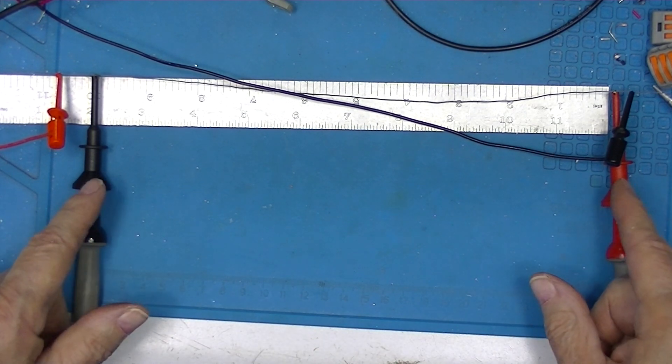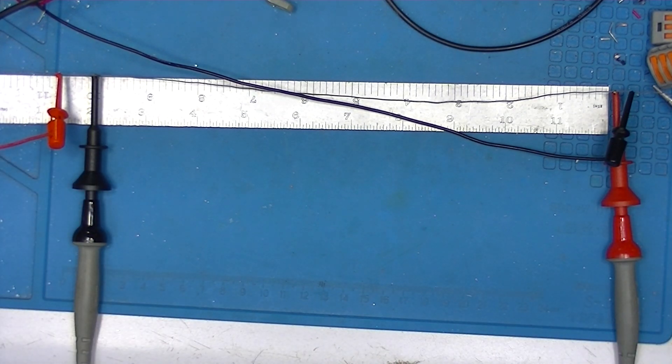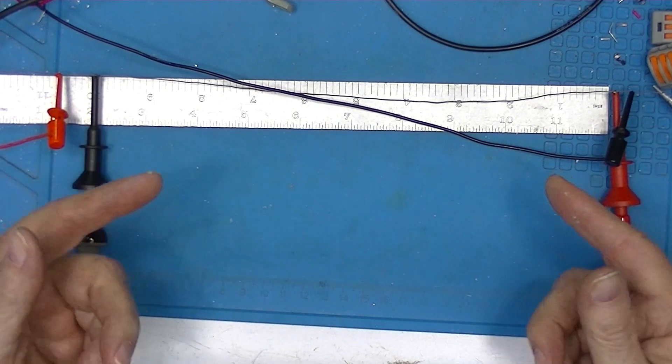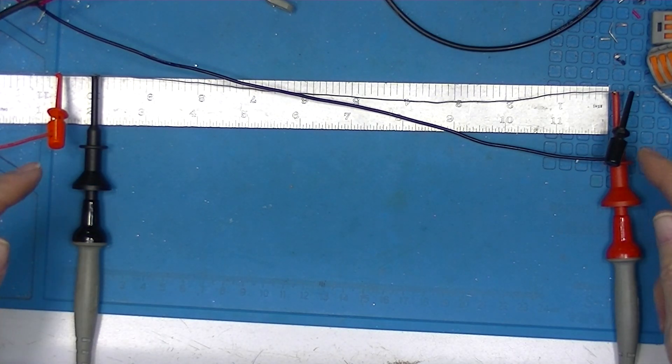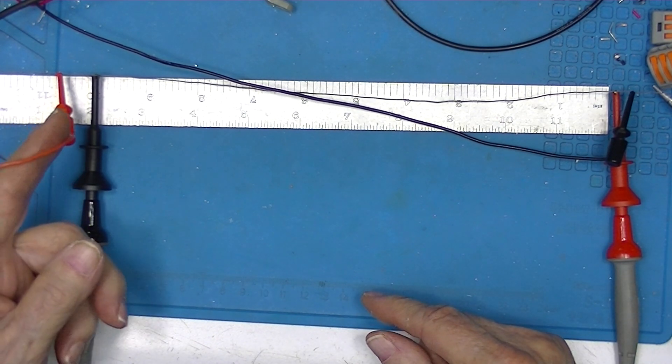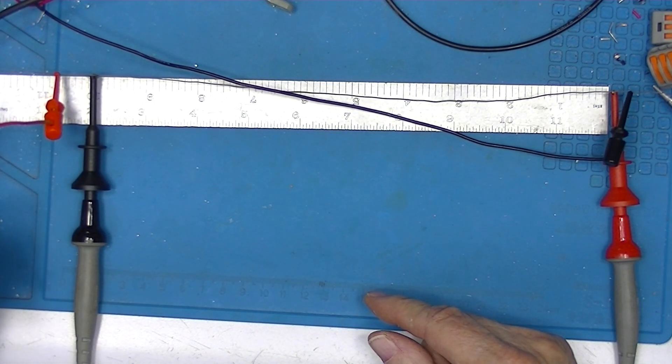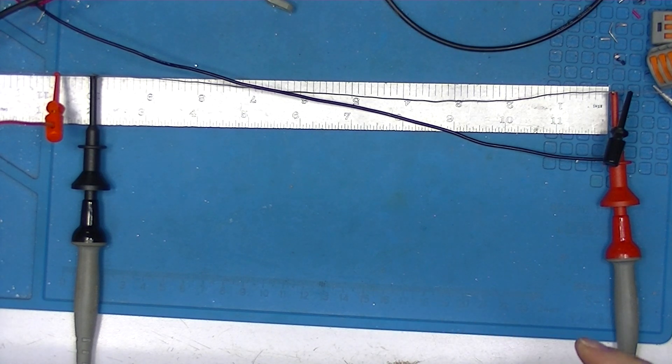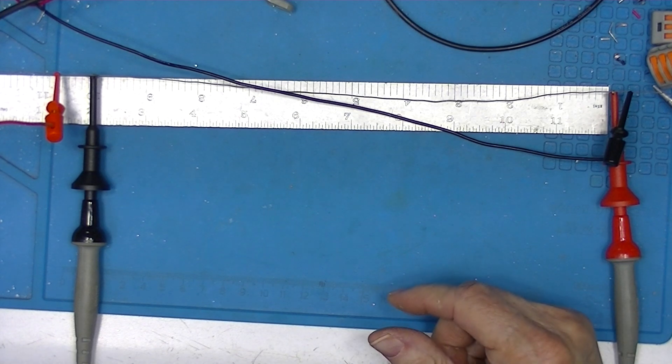We have one amp flowing through this wire, doesn't matter where we started at, could be halfway across the room. It doesn't matter what the resistance of this wire is either because one amp is flowing. It's a series circuit, has to be the same the whole way around.